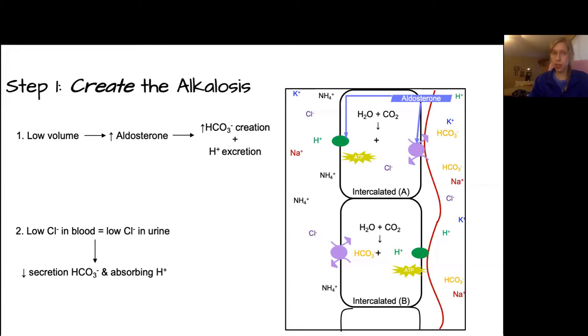In the case of low chloride in the blood, so keep in mind that example of a chloride-rich diarrhea, so you're low volume and you're low on chloride, this will also lead to a low chloride in the urine, because the urine comes from the filtrate and the glomerulus that ultimately just comes from the blood. So low chloride in the blood means low chloride in the urine. But this creates a problem, because we need that chloride in the filtrate in the urine to be able to exchange for the bicarbonate. So if we don't have that chloride there, we're not going to be able to excrete that bicarbonate.